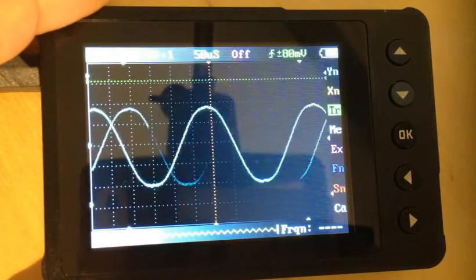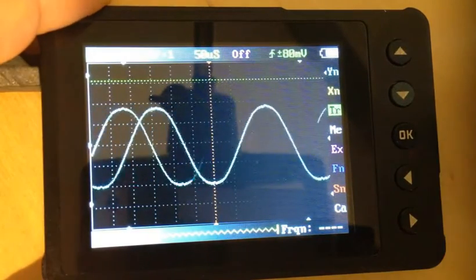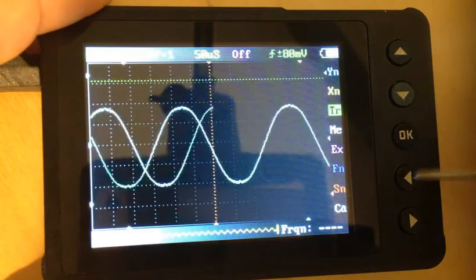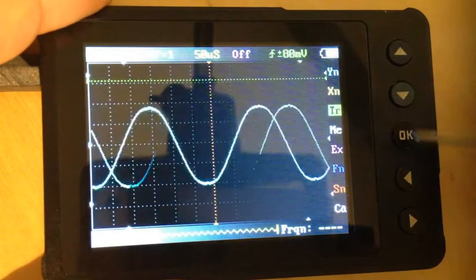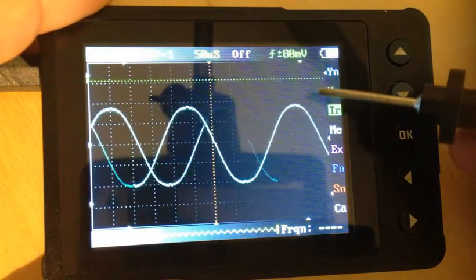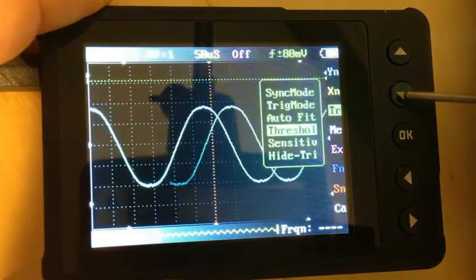So we have our waveform shown here. A little bit of a mess. Let's clean that up. First thing we should do is move up to trigger, and that green line is the trigger line. Let's move that into the waveform.